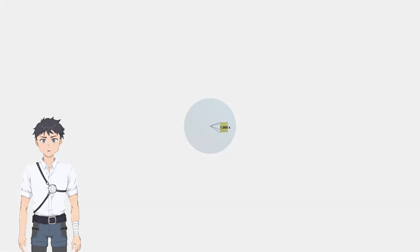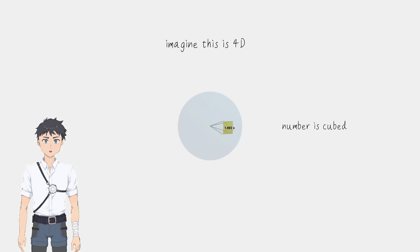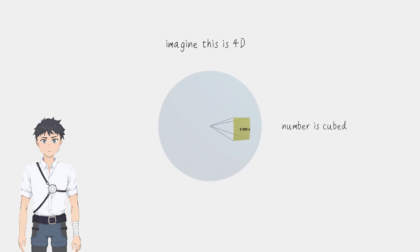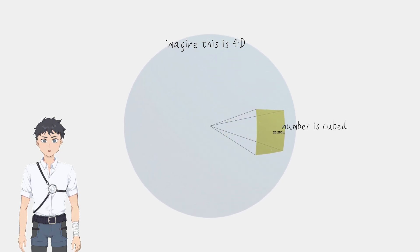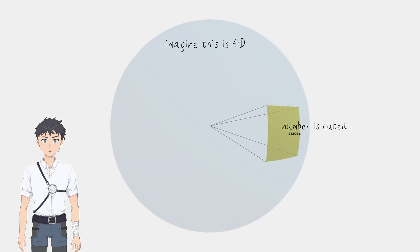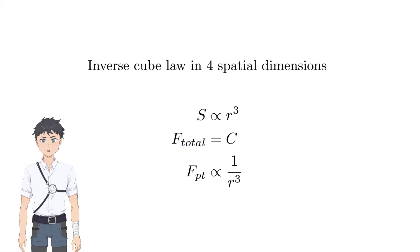Then in 4D, when the radius of the sphere grows, guess what happens? So in 4 spatial dimensions, the inverse square law actually becomes the inverse cube law. This continues for 5, 6, 7, and higher spatial dimensions.